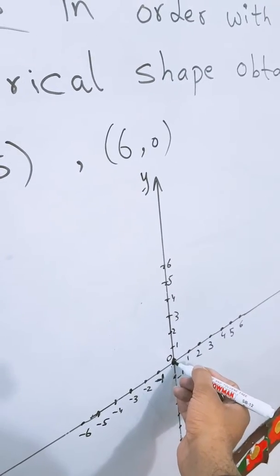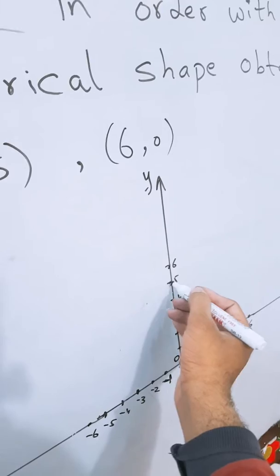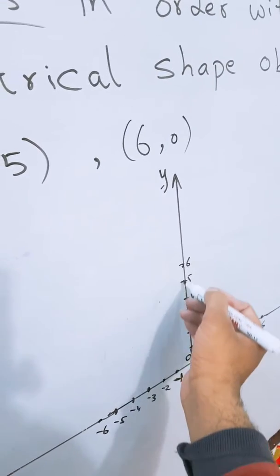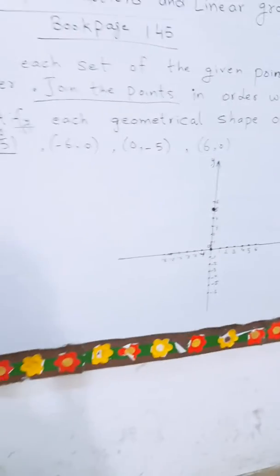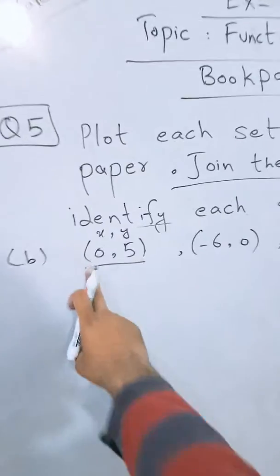You will come straight from here to five and you will plot a point here like this. So this is (0, 5). This was (0, 5) which I have plotted here.